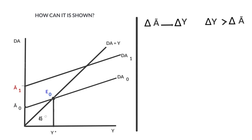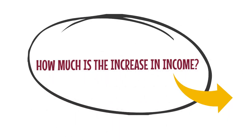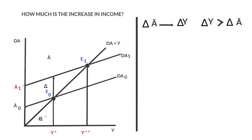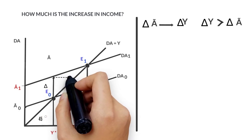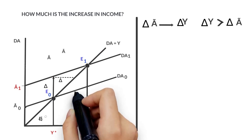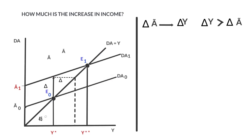Consequently, there is a new equilibrium point at E sub-one, where the new equilibrium value of income is income level 2. The initial increase in autonomous expenditure is represented by the increase in A. If it's projected on the bisecting line, we get the same value. If it's projected on the horizontal axis, we get the value of the increase in A. Graphically, it can be shown why this increase in A is lower than the final increase in income.